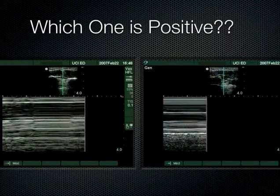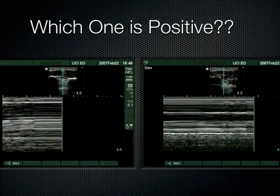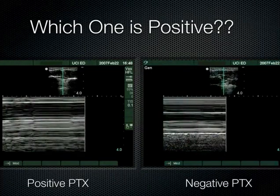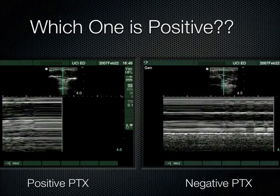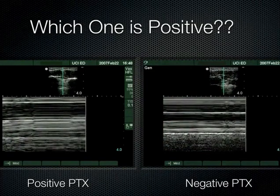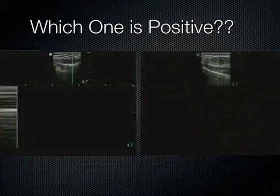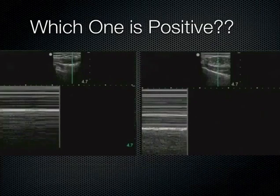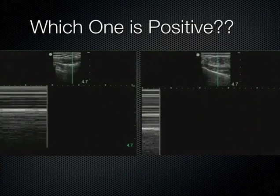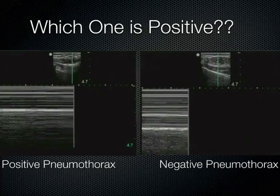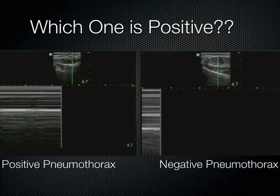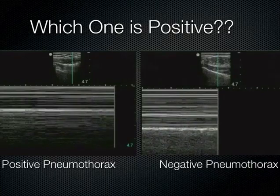Instead of ordering a chest x-ray, waiting for a tech, getting a film, and waiting for a read — 30 minutes for an answer — you can just put the probe on the chest and get your answer in 30 seconds, really benefiting the patient by knowing immediately what's going on.